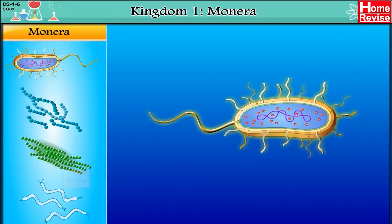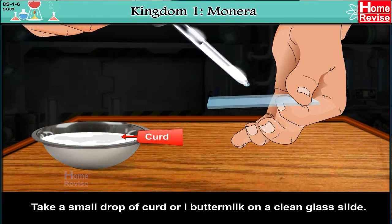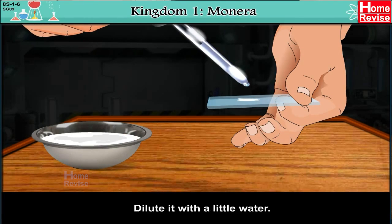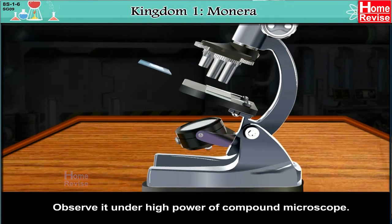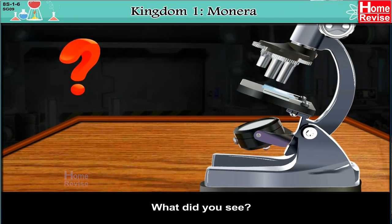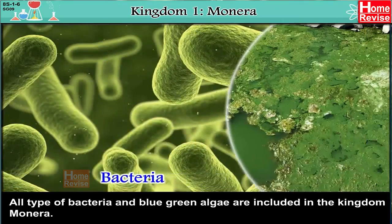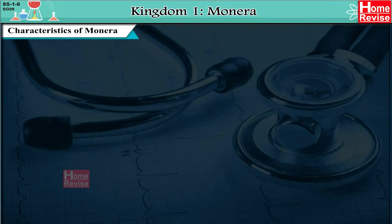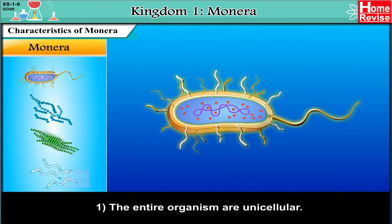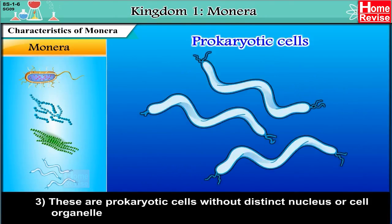Kingdom 1: Monera. Activity: Take a small drop of curd or buttermilk on a clean glass slide, dilute it with a little water, carefully place a cover slip, and observe under high power of a compound microscope. The moving small rod-like microbes are Lactobacilli bacteria. All types of bacteria and blue-green algae are included in Kingdom Monera. Characteristics: 1. All organisms are unicellular. 2. They may be autotrophic or heterotrophic. 3. These are prokaryotic cells without a distinct nucleus or cell organelles.